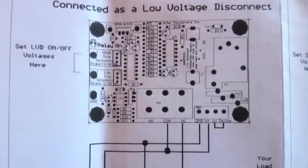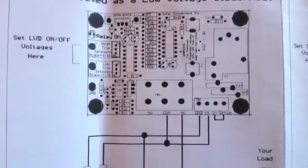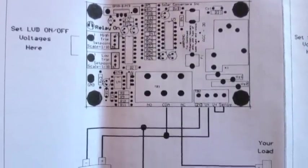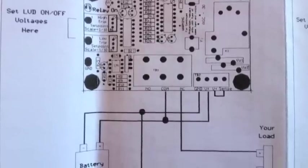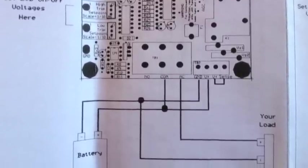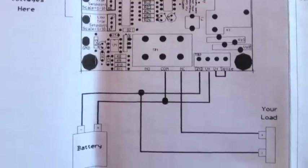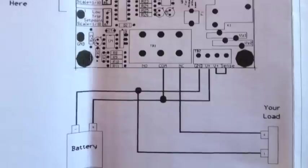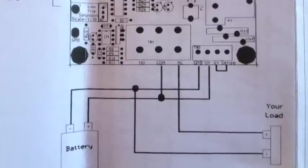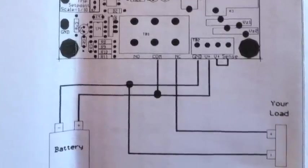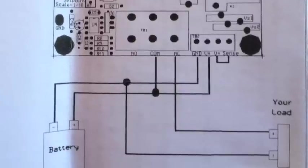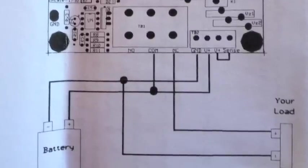This is a connection as a low voltage disconnect. And here we would disconnect when the battery voltage got to a point where we wanted it to stop from draining to avoid any damage to the battery bank. It would disconnect your load. And see here we have NO on the left and NC. It's connected to NC, normally closed or normally open.